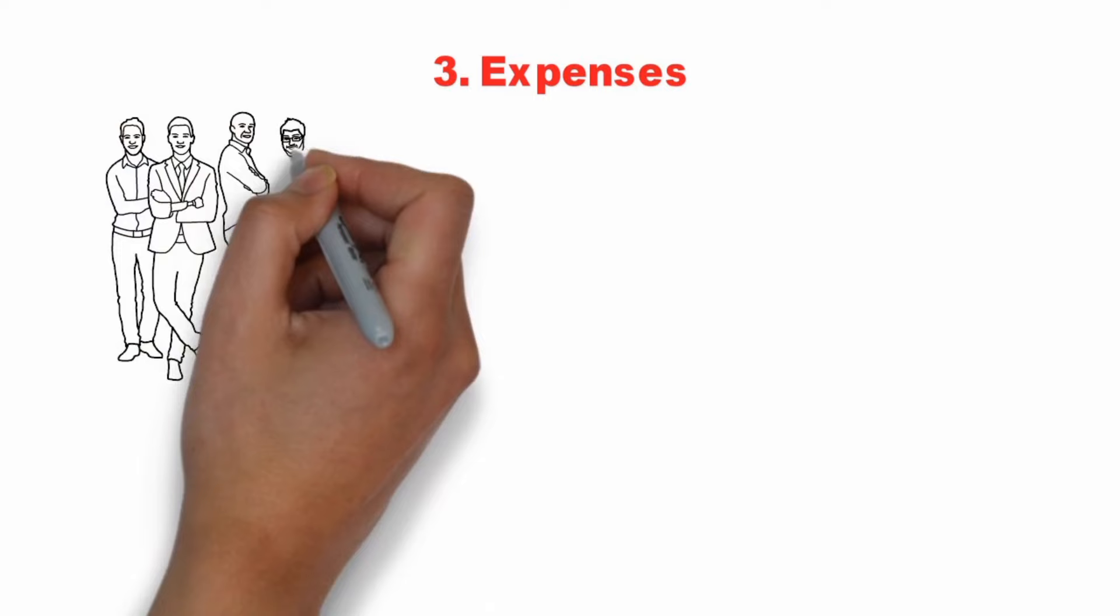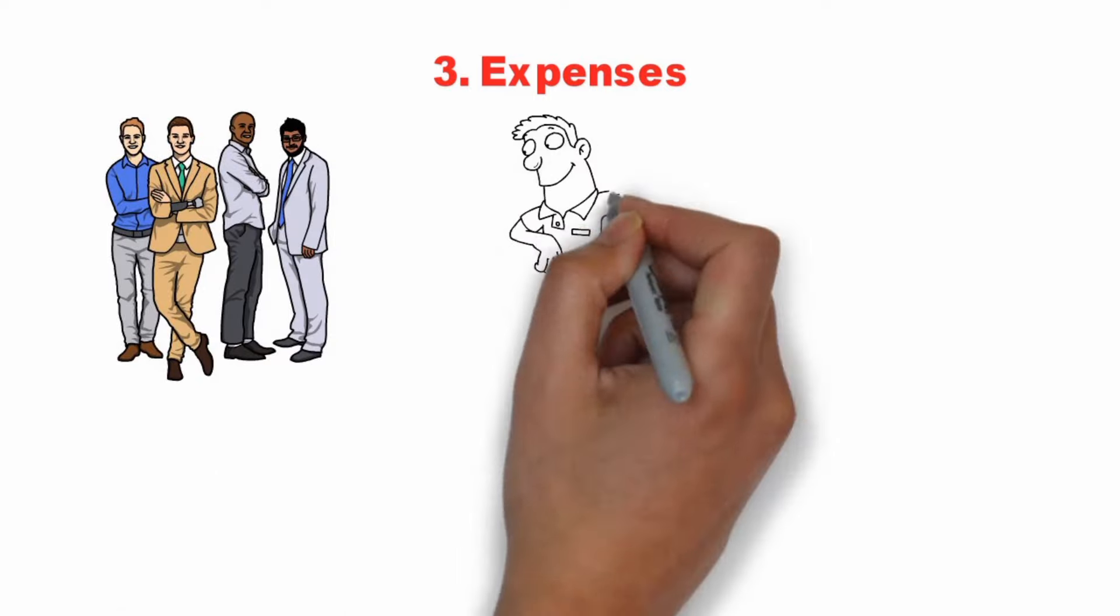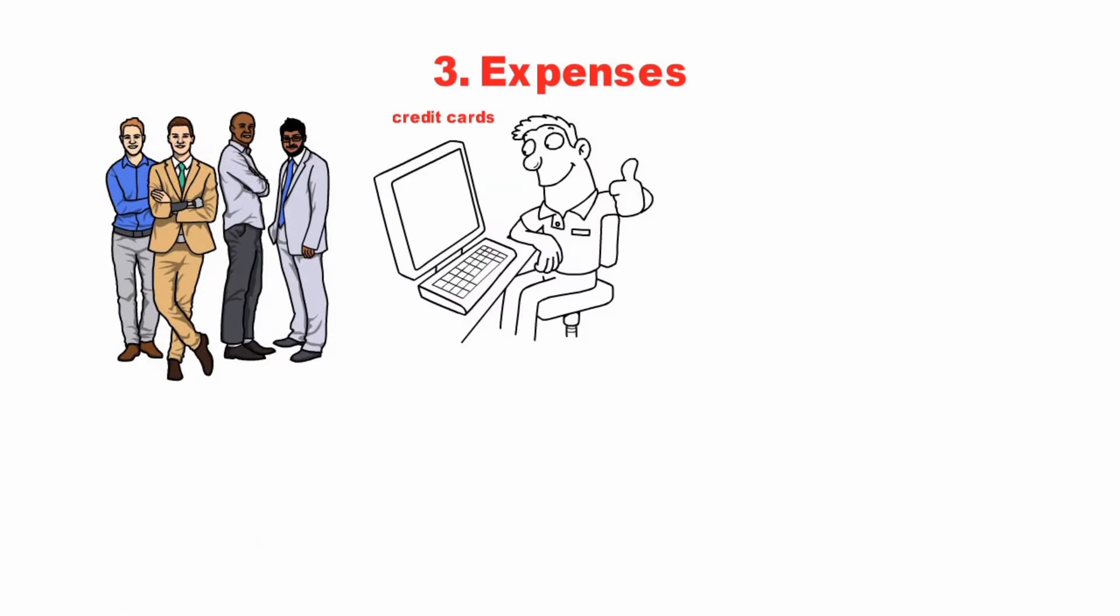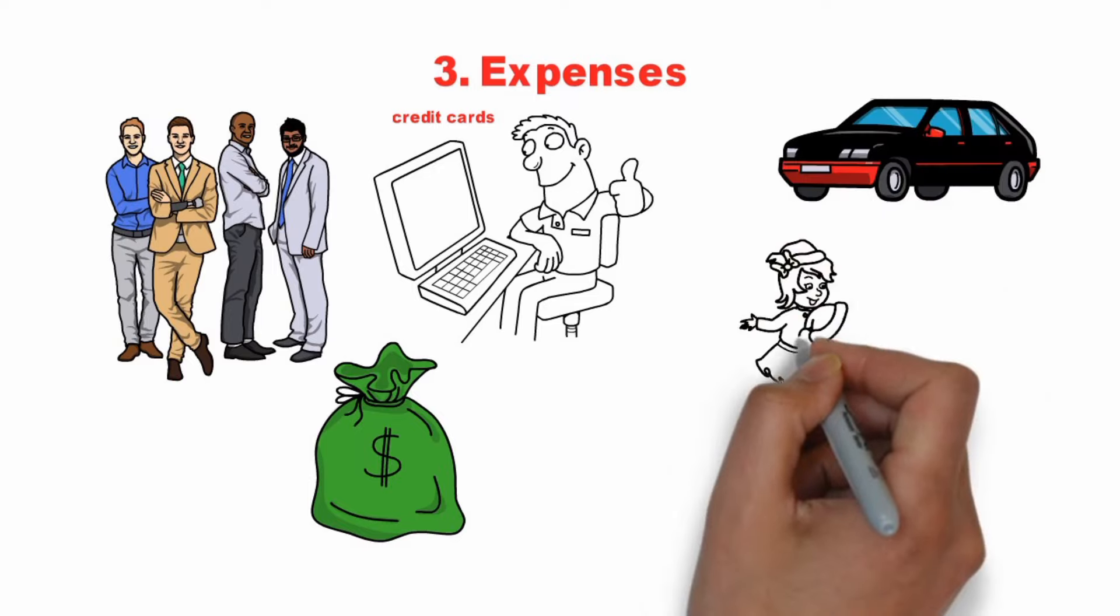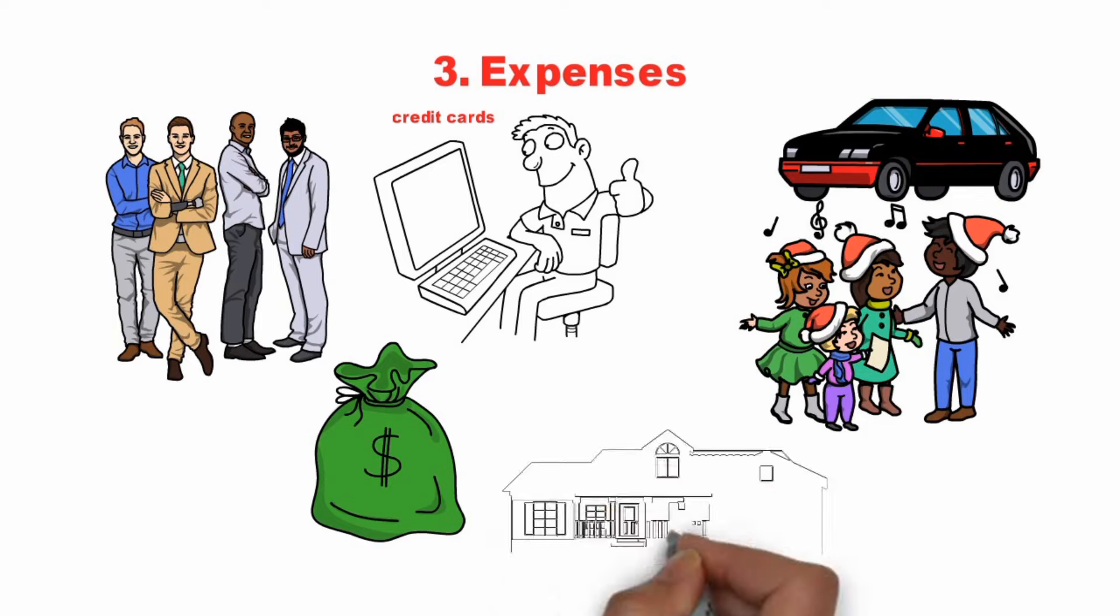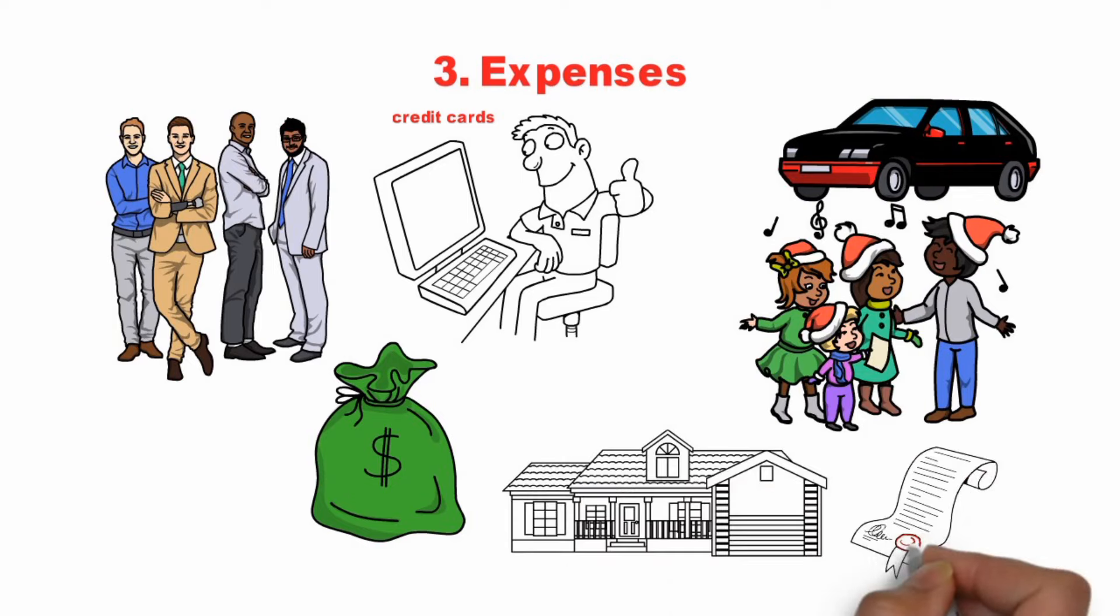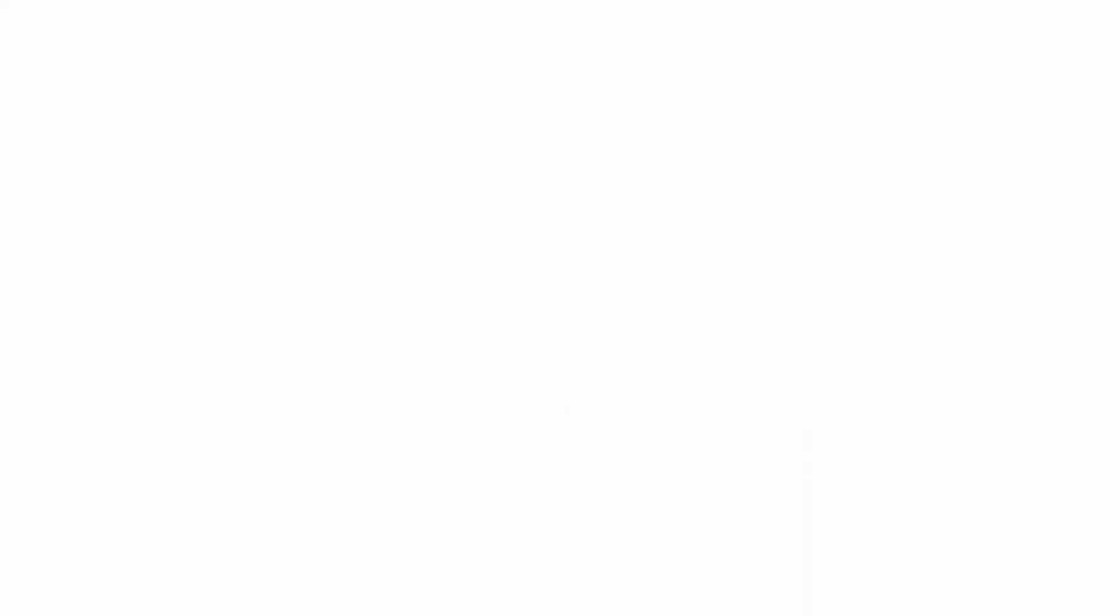Expenses. It is common for rich people to supplement their income by using credit cards to cater to their high cost of living. This might include multiple car leases or payments, expensive extracurricular activities for their children, or a pricey mortgage in an upscale neighborhood, which may lead to higher property taxes.